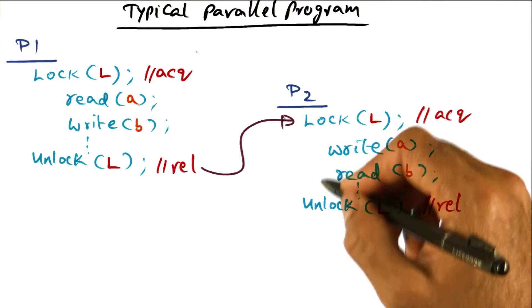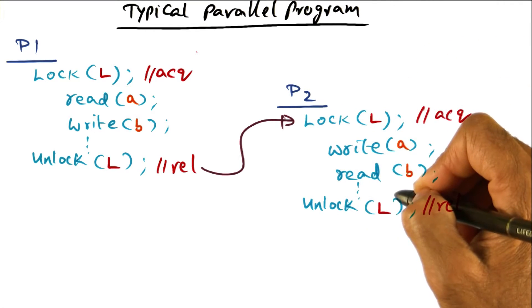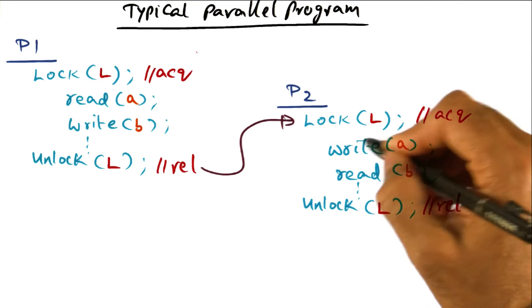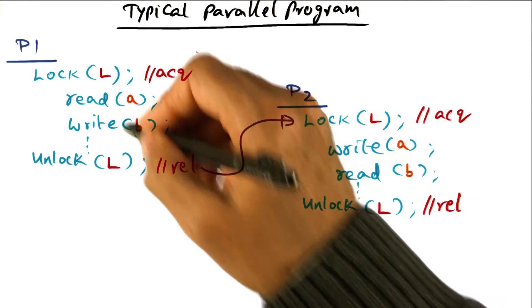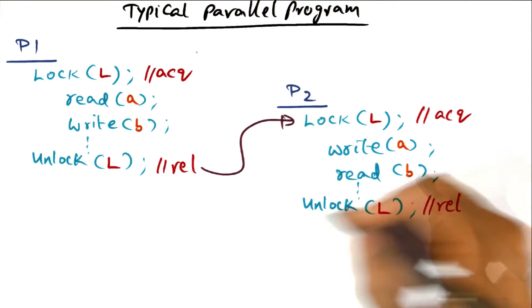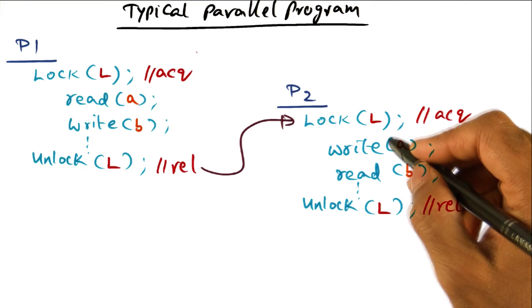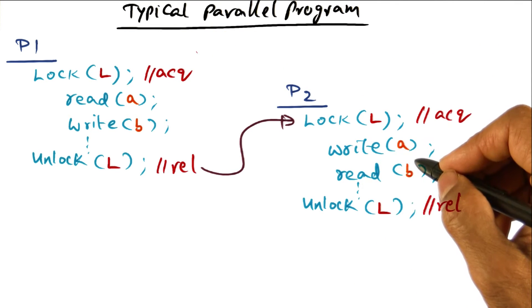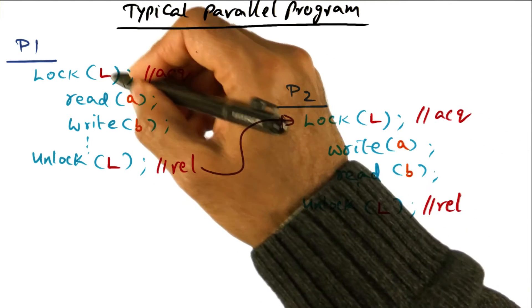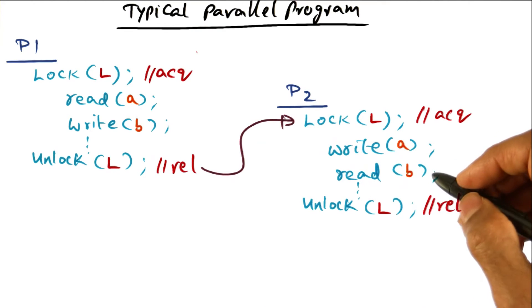And consequently, if you look at the structure of this critical section for P2, it gets a lock, and it is messing with the same set of data structures that I was messing with over here. But, by design, we know that either P1 or P2 can be messing with this data structure at any point of time. And that's the guarantee that I know comes from the fact that I designed the parallel program, and this lock is associated with these data structures.